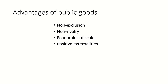Now let's talk about the advantages of public goods. Non-exclusion: public goods are available to everyone regardless of their ability to pay, meaning everyone can benefit from them regardless of their income or wealth. Non-rivalry: the consumption of a public good by one person does not reduce the amount available for others, so the benefits can be shared by everyone. Economies of scale: public goods often have significant economies of scale, meaning the cost of producing them decreases as the quantity produced increases. Positive externalities: public goods can create positive externalities — benefits that accrue to individuals not directly consuming the good. For example, public parks can increase property values and improve the quality of life in a community.